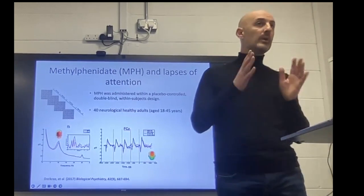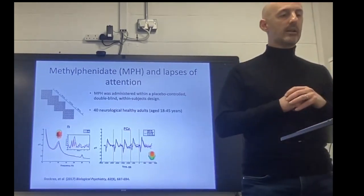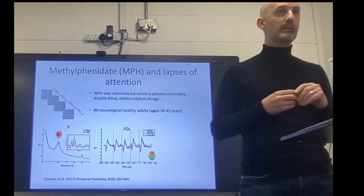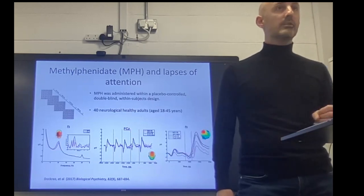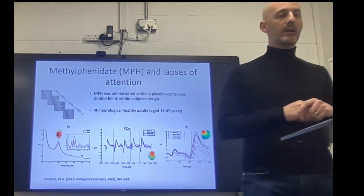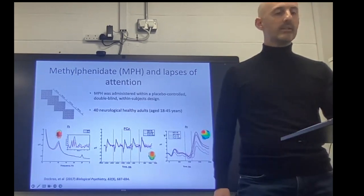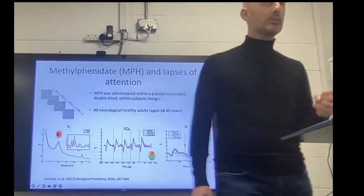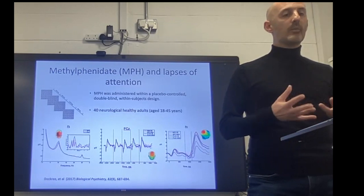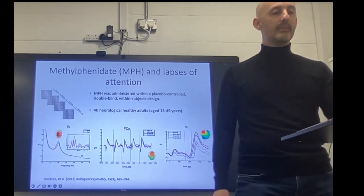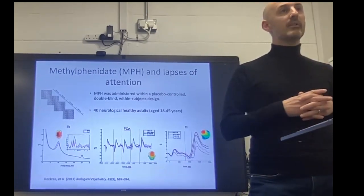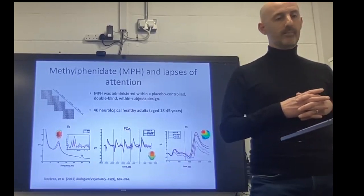In the four seconds prior to the target, methylphenidate increased the amplitude of the P3 tracking the temporal structure of the task. The classic measure of visual attention, the parietal P3, was also boosted by methylphenidate. Interestingly, because of its role in noradrenaline and increasing neural gain, we see an increase also on the rare lapse trial when someone's under the drug condition, suggesting the drug is pushing performance nearer the threshold for detection even on rare misses.